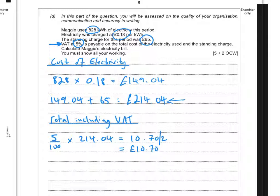So my overall total would be £214.04 plus tax at £10.70, which should give me a total bill of £224.74.